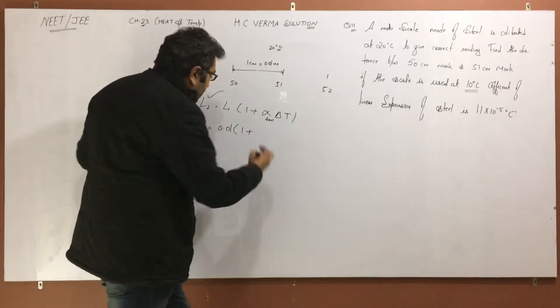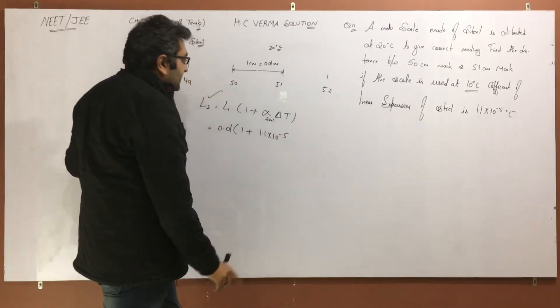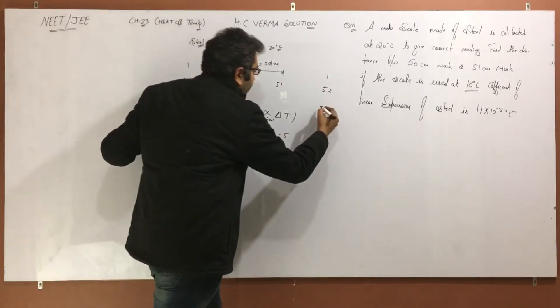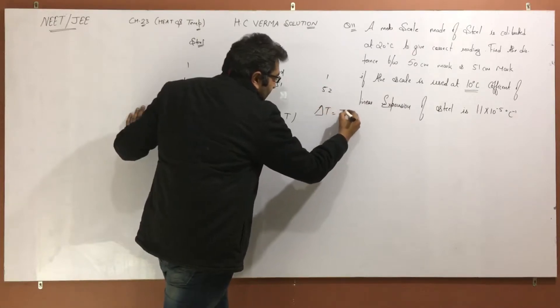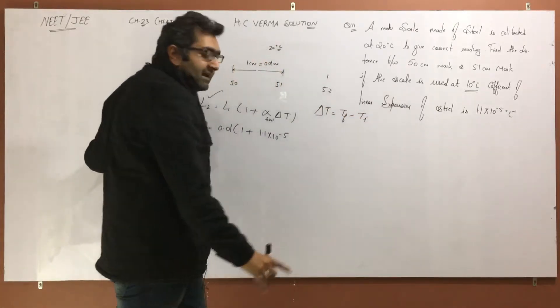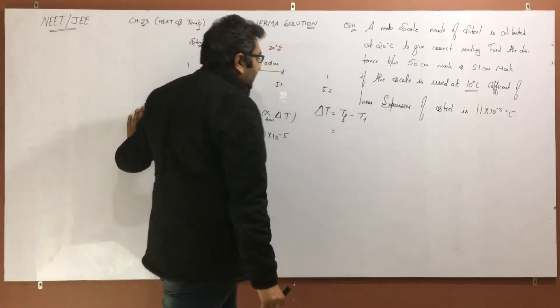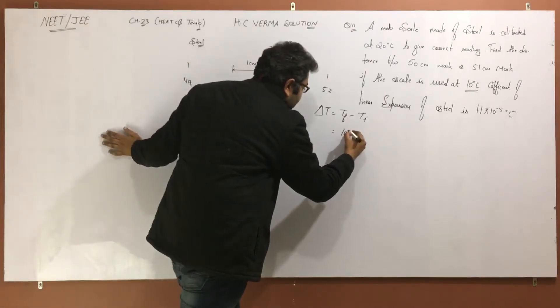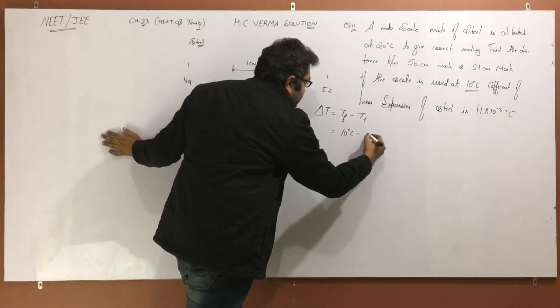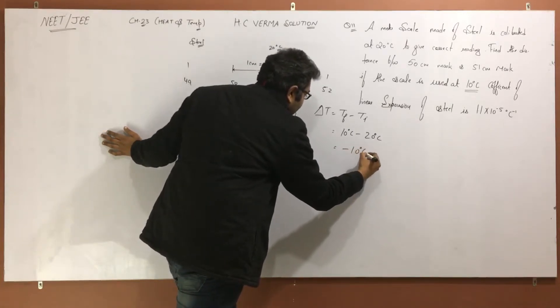Alpha is 1.1 × 10^-5 per degree Celsius. Now let's talk about delta T, which is very important part. Delta T means final temperature minus initial temperature. Final temperature is 10 degrees Celsius. Initial temperature is 20 degrees Celsius. Which is equal to minus 10 degree Celsius.